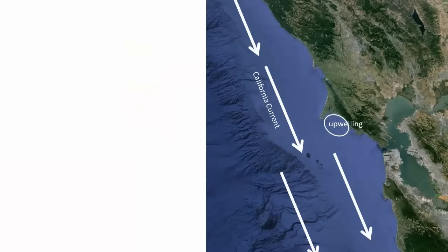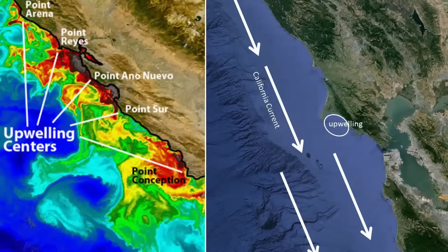The California current and other eastern boundary currents can also cause upwelling when the coastline bends inland. Water is pulled south, away from the downcurrent side of the bend, creating a zone where deep water can well up and take its place. Everywhere there's a bend along the California coastline, we get increased upwelling on the downcurrent side because of this phenomenon.